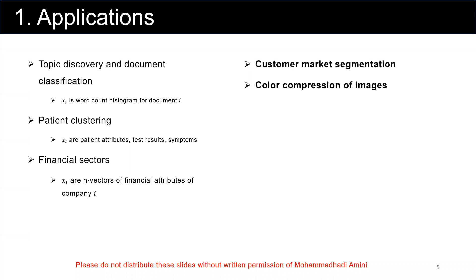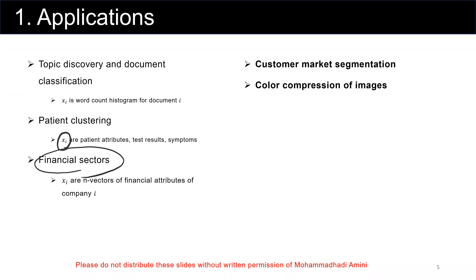What are the applications of clustering? The first application, as computer scientists and information technologists, is topic discovery and document classification, where x sub i is the word count histogram for document i. The second is healthcare — patient clustering — where data points x sub i are patient attributes, test results, and symptoms. The next application domain is the financial sector, where x sub i represents financial attributes of companies. There are also other applications: customer market segmentation in retail, and color compression of images. As you can see, clustering has several applications.